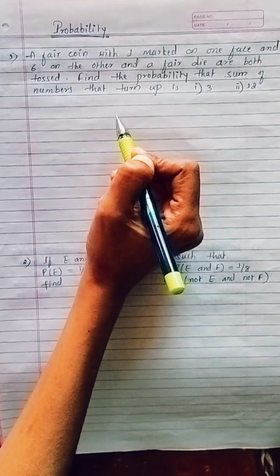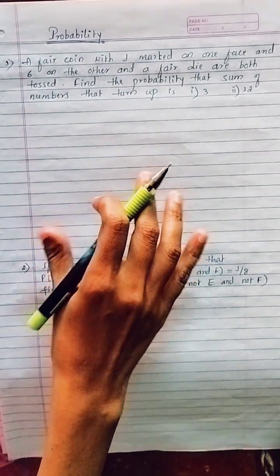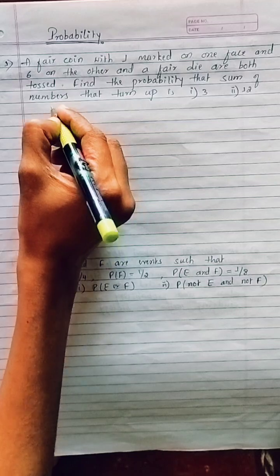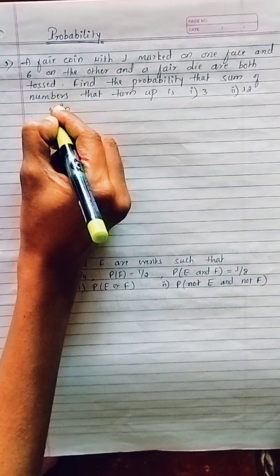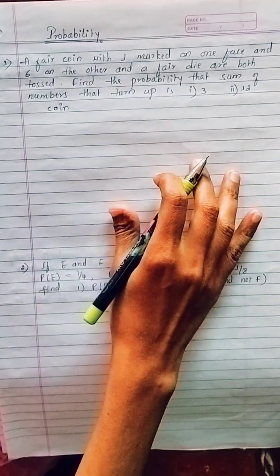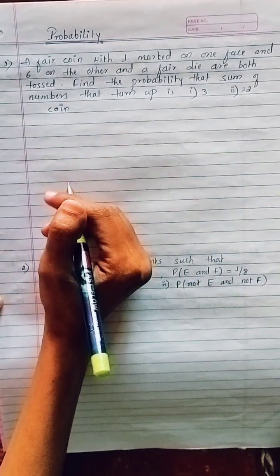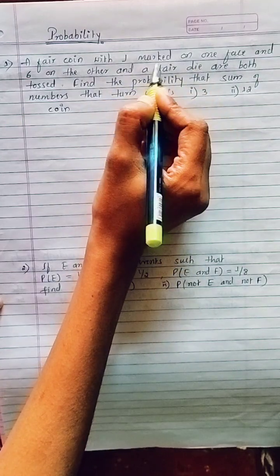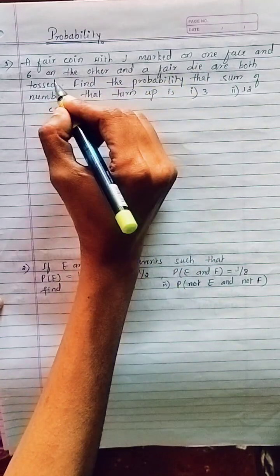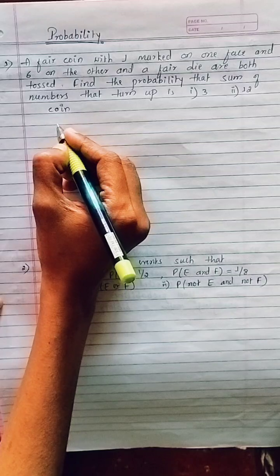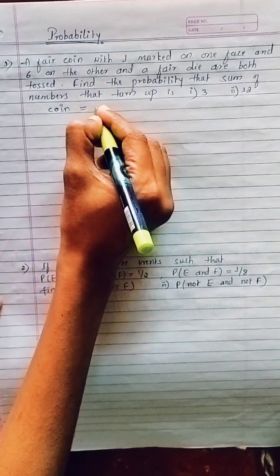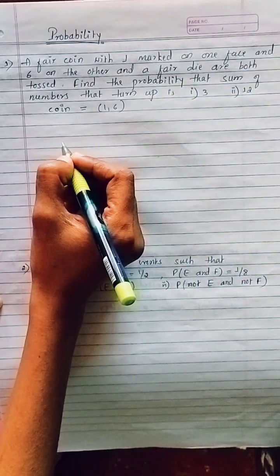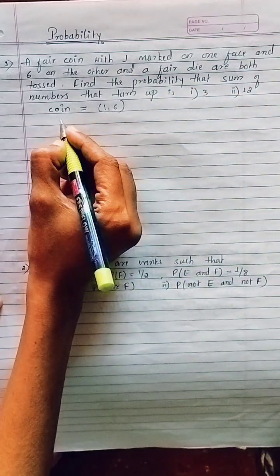We have two sub-questions to solve. Given data: a coin is tossed — normally we get head and tail, but here it is marked with one on one face and six on the other face. So when we toss the coin, we will get 1 or 6. On the other hand, a fair die is tossed.